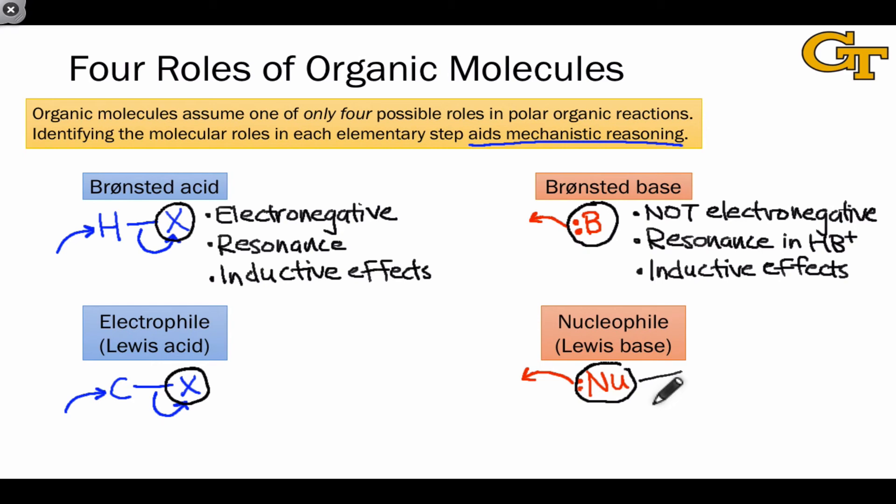These are the four possible roles of any molecule, be it organic or inorganic, in any polar organic reaction. One of the first things you should always do when analyzing a reaction is identifying Bronsted acids or Bronsted bases and Lewis acids or Lewis bases. We've talked about the factors that make molecules better electrophiles and nucleophiles already, and you should focus your attention on these factors when making these kinds of judgments.